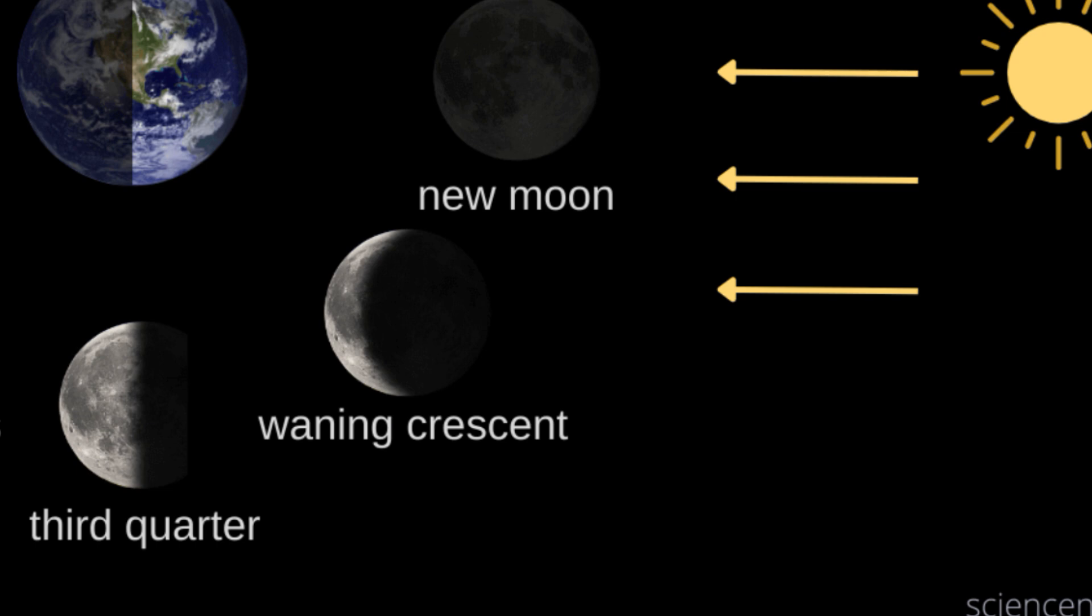Waning crescent. Finally, the waning crescent phase occurs just before the new moon. The moon appears as a thin crescent on the left side, with the illuminated part continuing to shrink.